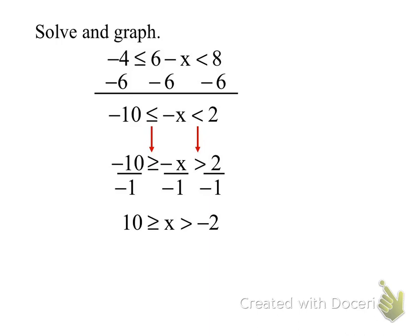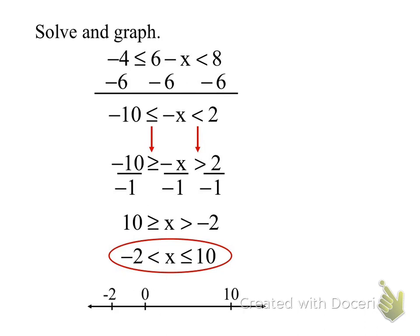Now I need to reorder it since it must be written from least to greatest. So it becomes: negative 2 is less than or equal to x, which is less than 10. Then we graph it: open circle at negative 2, and a solid circle at 10. Draw the line between them.